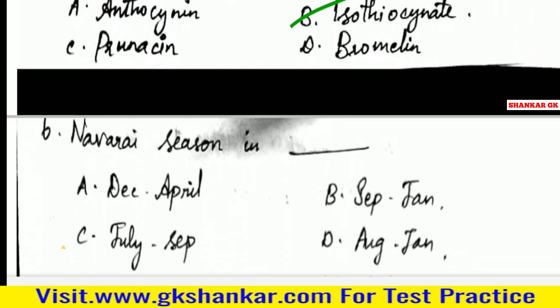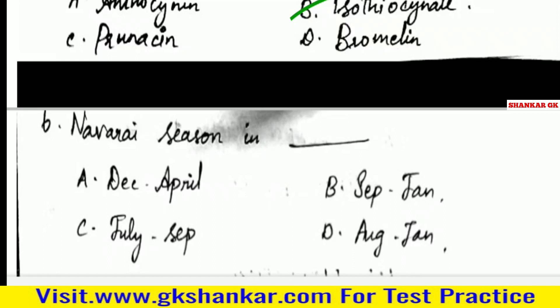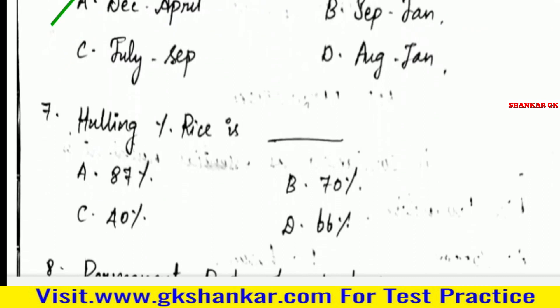Sixth question: Navarai season is in — A. December to April, B. September to January, C. July to September, D. August to January. Answer: A. December to April.